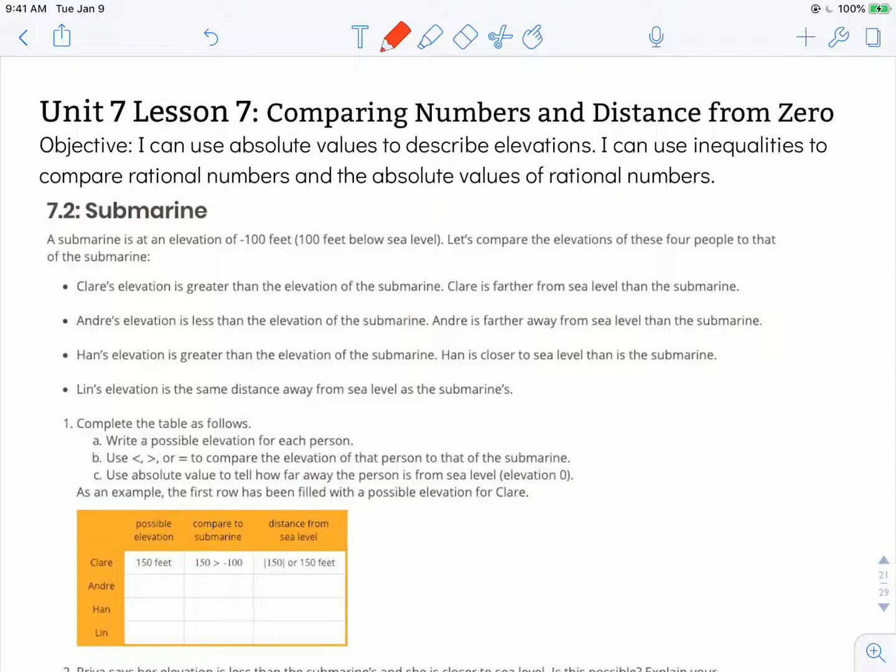If we stopped right there, we could write negative 99.5 feet, and that would be greater than negative 100 feet. It would be higher on the number line. There's negative 100, here's zero. Negative 99.5 would be higher than the submarine, but we have to keep reading.